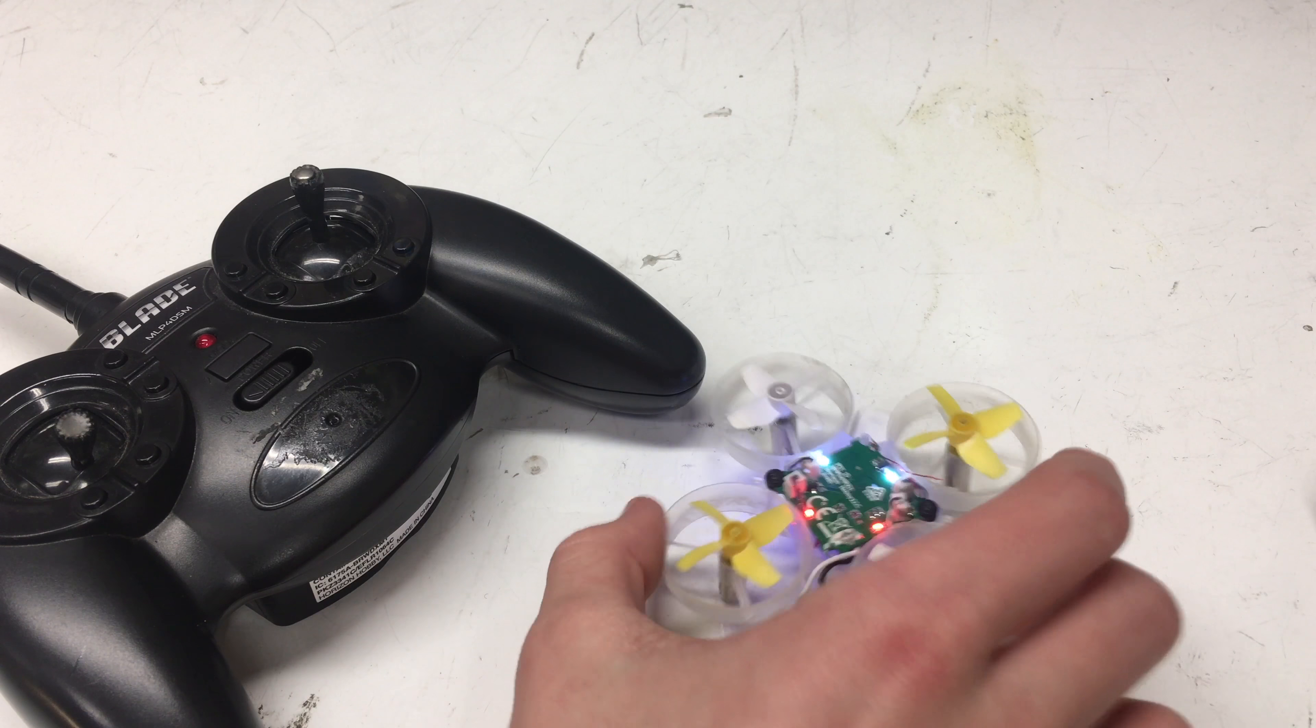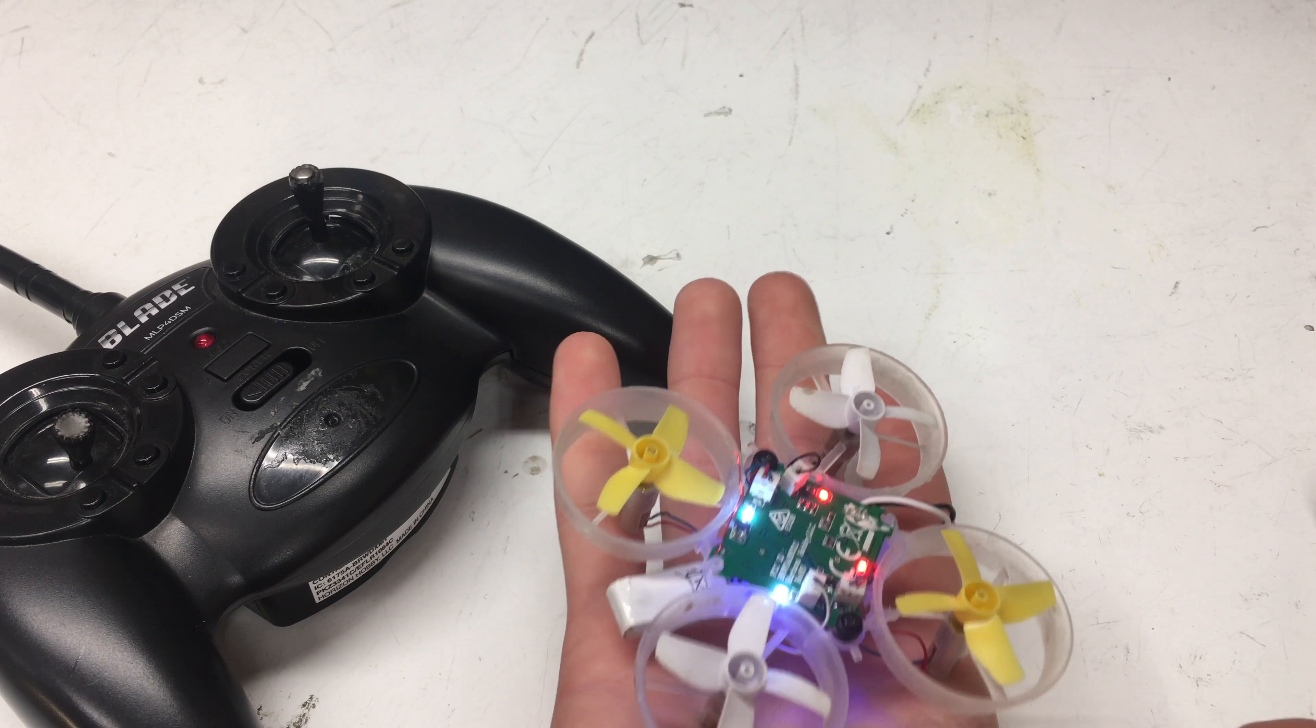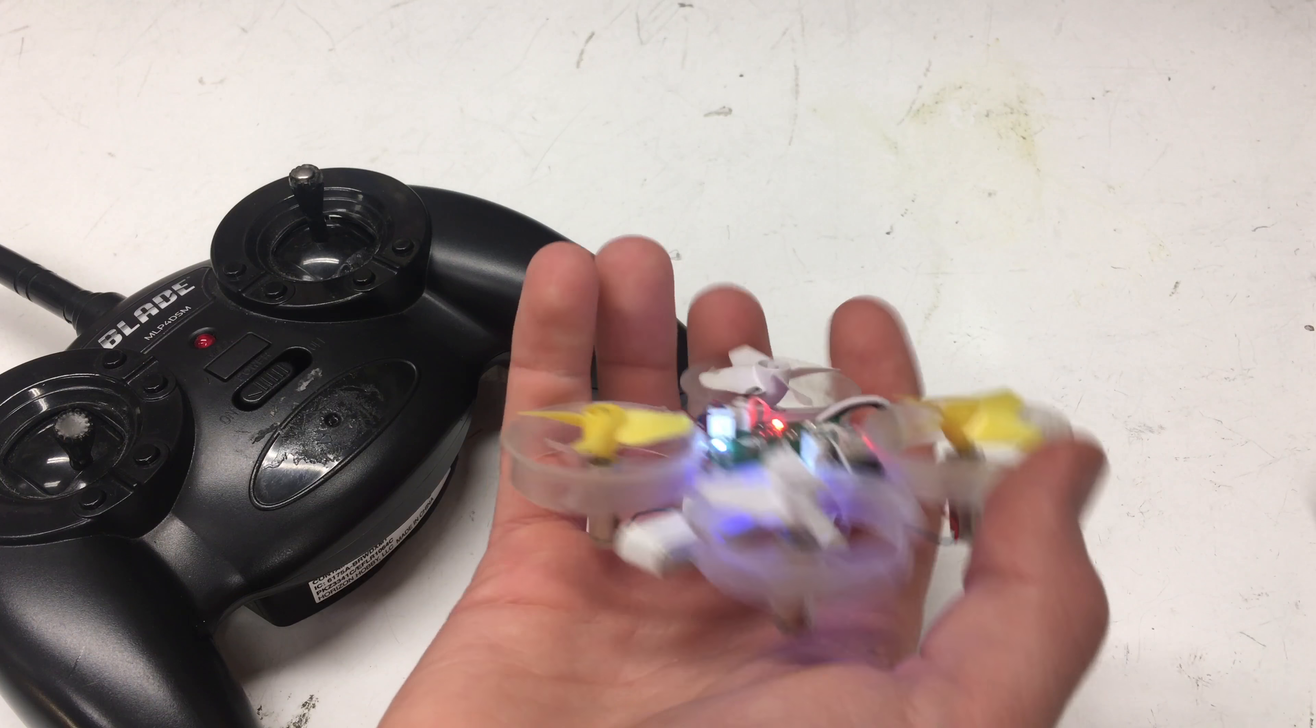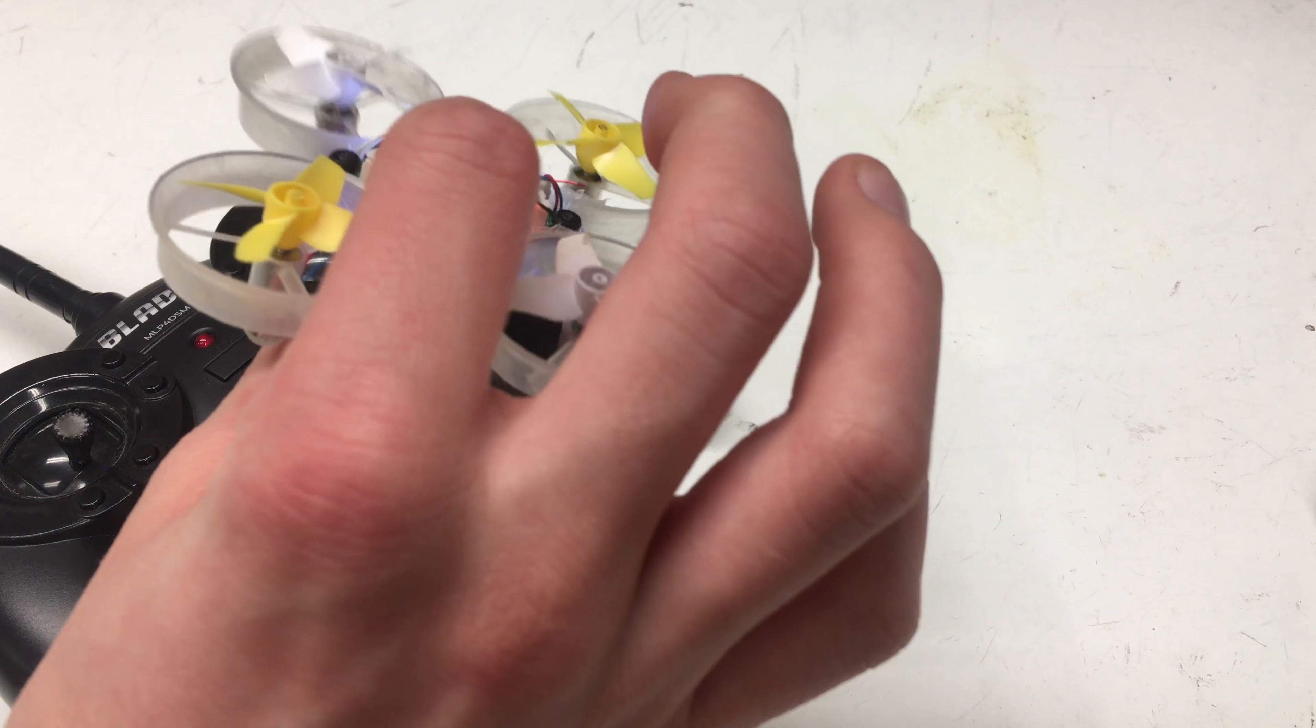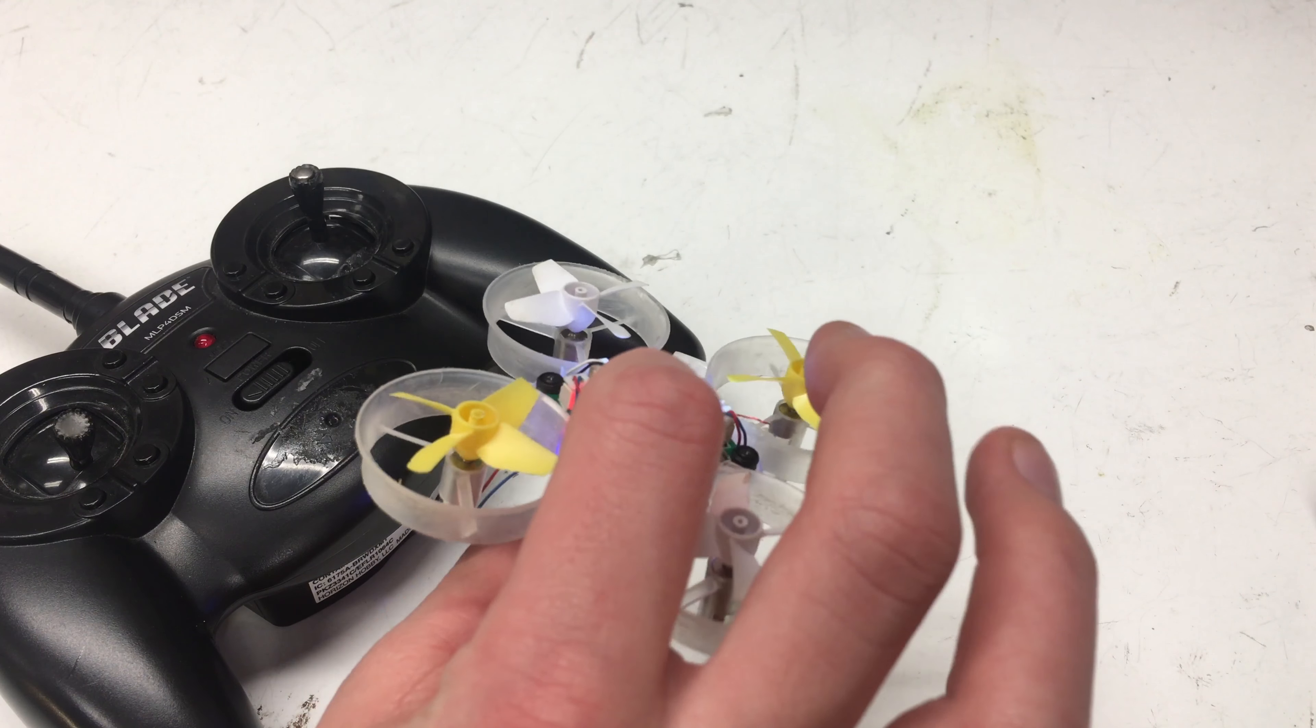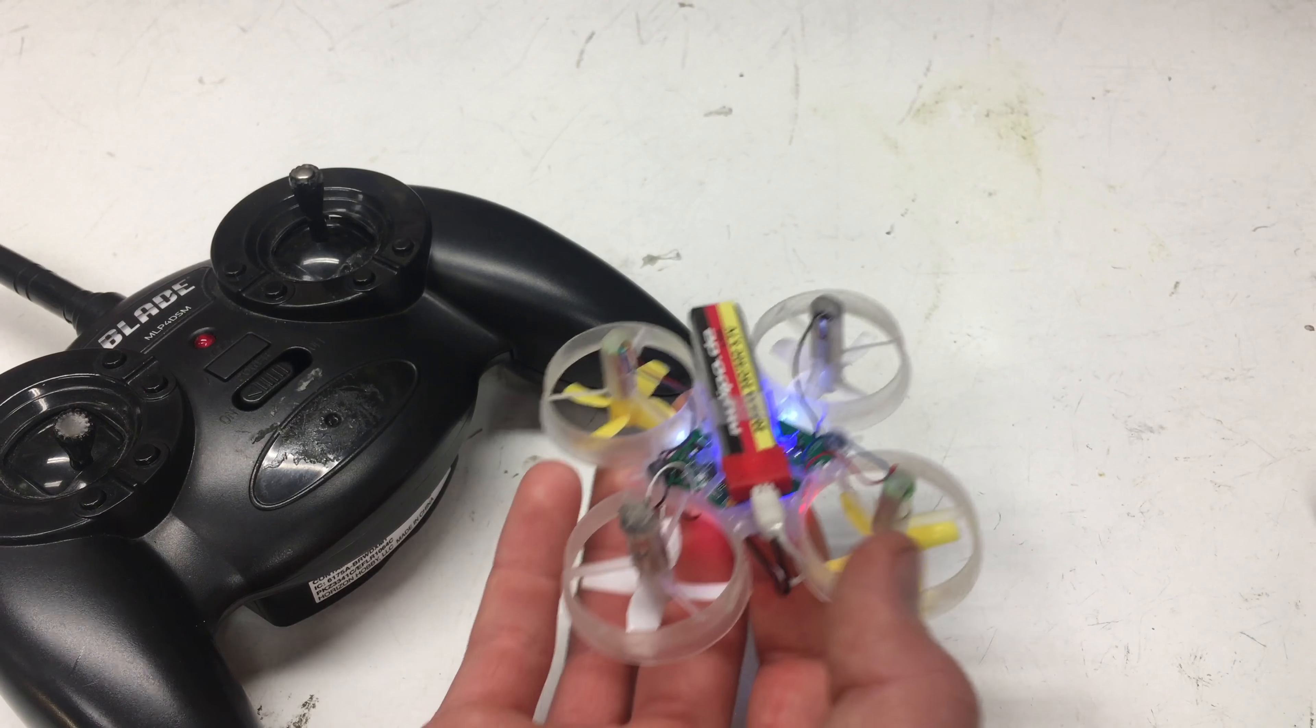Alright, so I finished it up, and as you can see, it kind of looks like a normal Inductrix from the top. But the props are flipped over to maximum lift efficiency. I tried to do it with the props just as they would be normally so they'd be lifting upside down, but I found that didn't work.